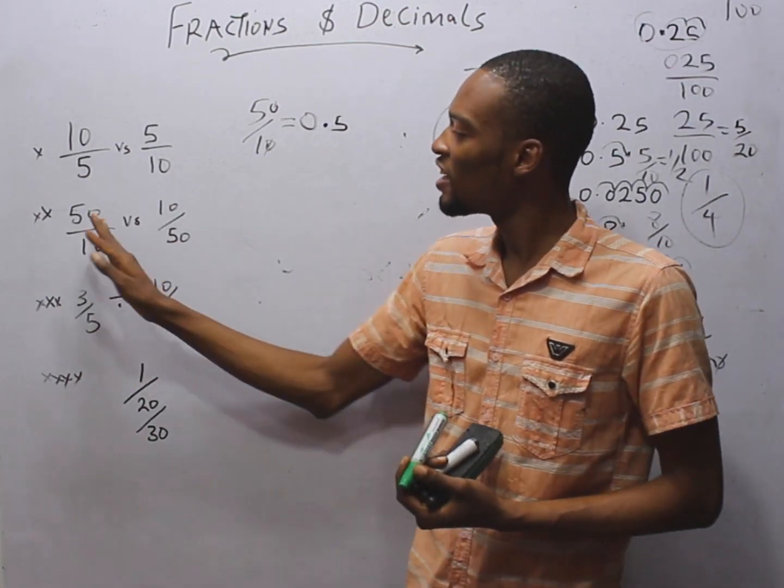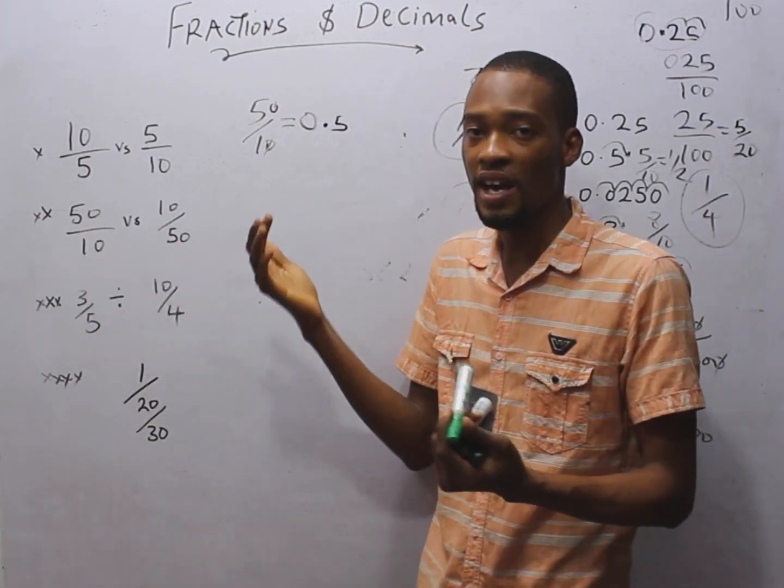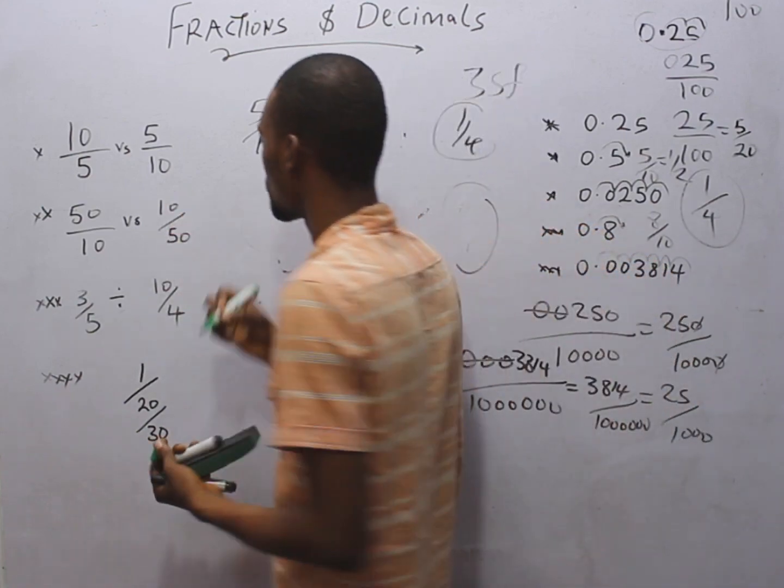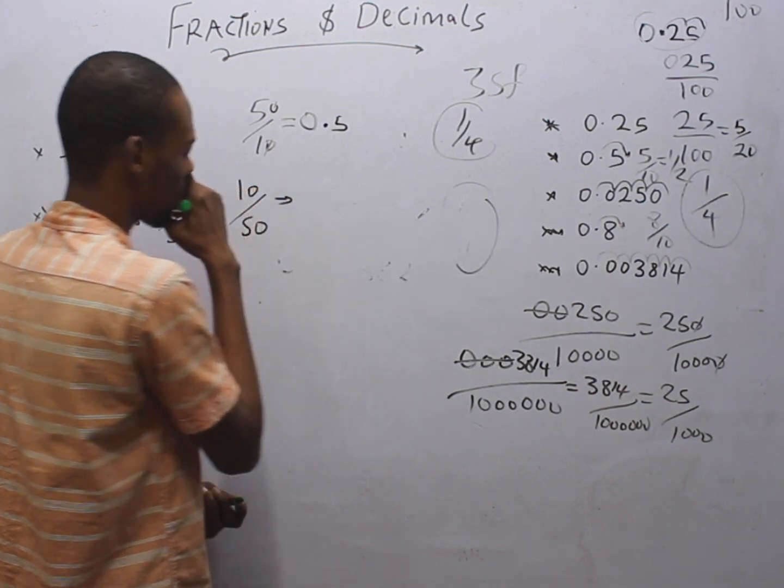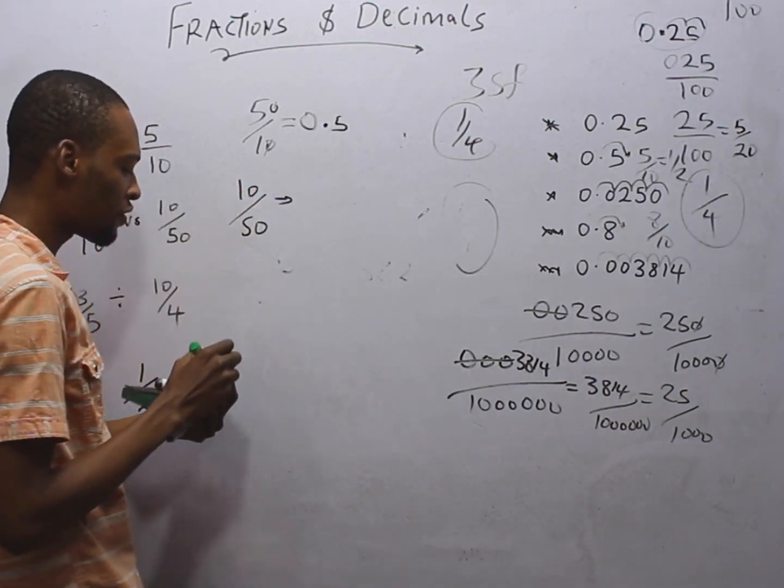This cancel this. 5 over 1 is 5. So this is simply 0.5. Simple, right? How about this? 50 divided by 10 is obviously 5. What about 10 divided by 50?